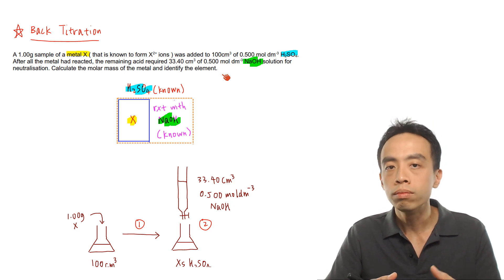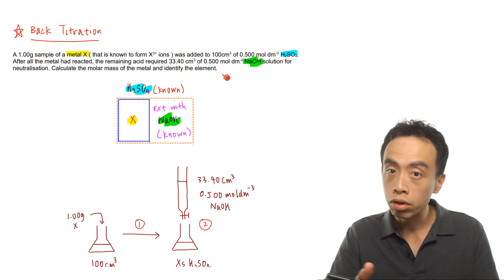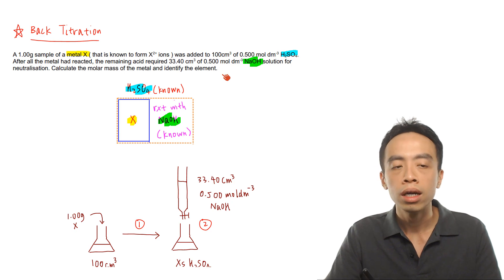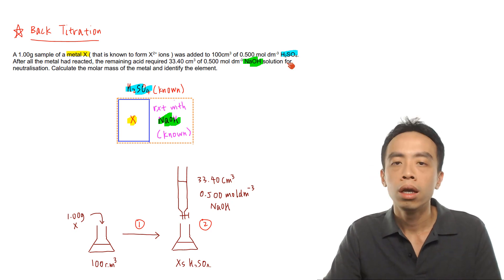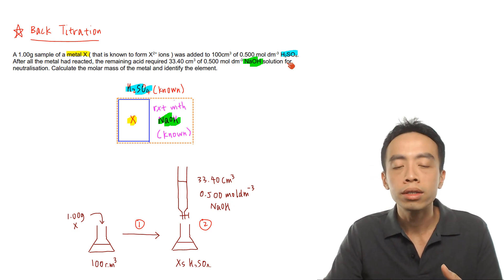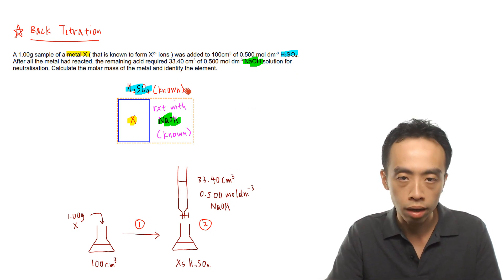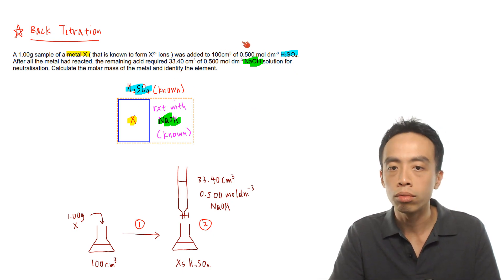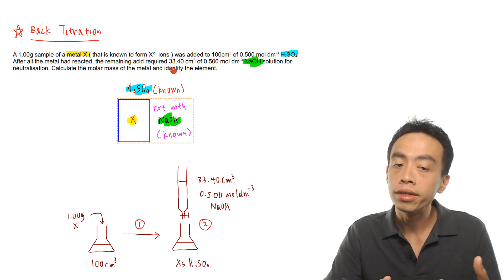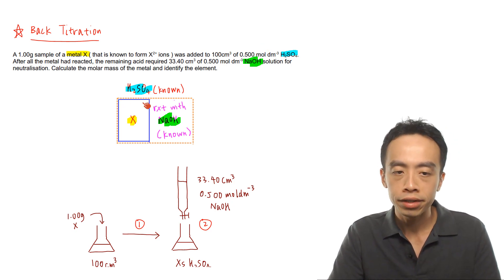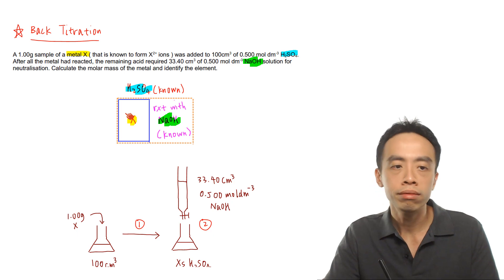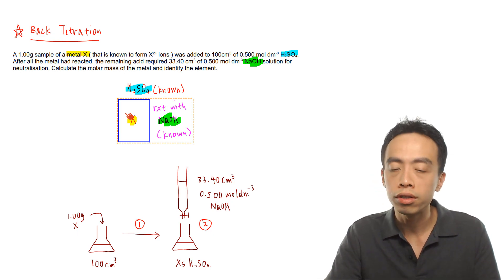So what we have to do is use back titration to figure out the amount of metal X. What we are doing is adding excess H₂SO₄ — a known amount because the volume and concentration are given. Part of it reacts with X, and the remaining portion we will titrate with sodium hydroxide.